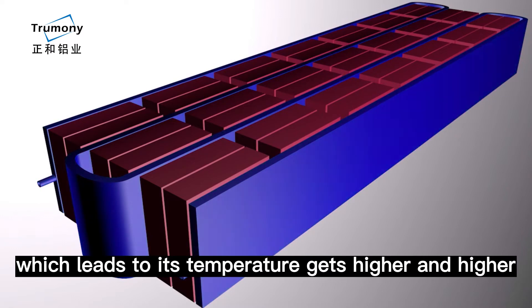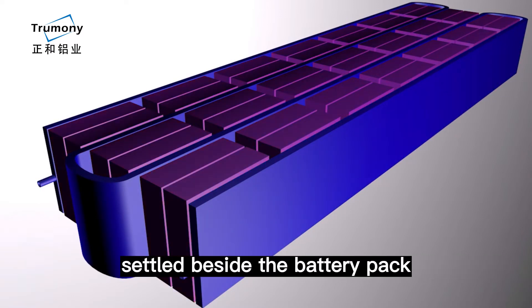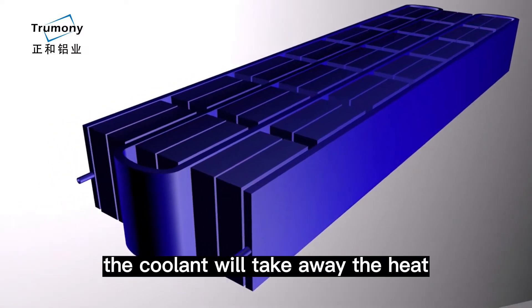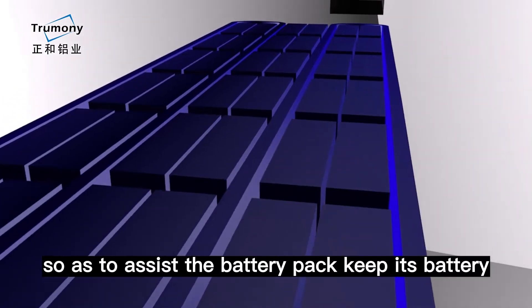But with the coolant going through this cooling tube settled beside the battery pack, the coolant will take away the heat produced by the battery, so as to assist the battery pack keep its battery under an optimal temperature in case the battery gets too hot.